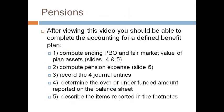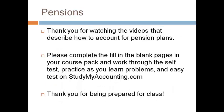After viewing this video, you should be able to complete the accounting for a defined benefit plan. This includes computing the ending pension benefit obligation and fair market value of plan assets, computing the pension expense, and recording the four journal entries. After doing this, you can determine the over or underfunded amount reported on the balance sheet. You will also be able to describe the items reported in the footnotes. Please complete the fill-in-the-blank pages in your course pack and walk through the self-test, practice-as-you-learn problems, and the easy test on studymyaccounting.com before class. Thank you for being prepared for class — it is really appreciated.